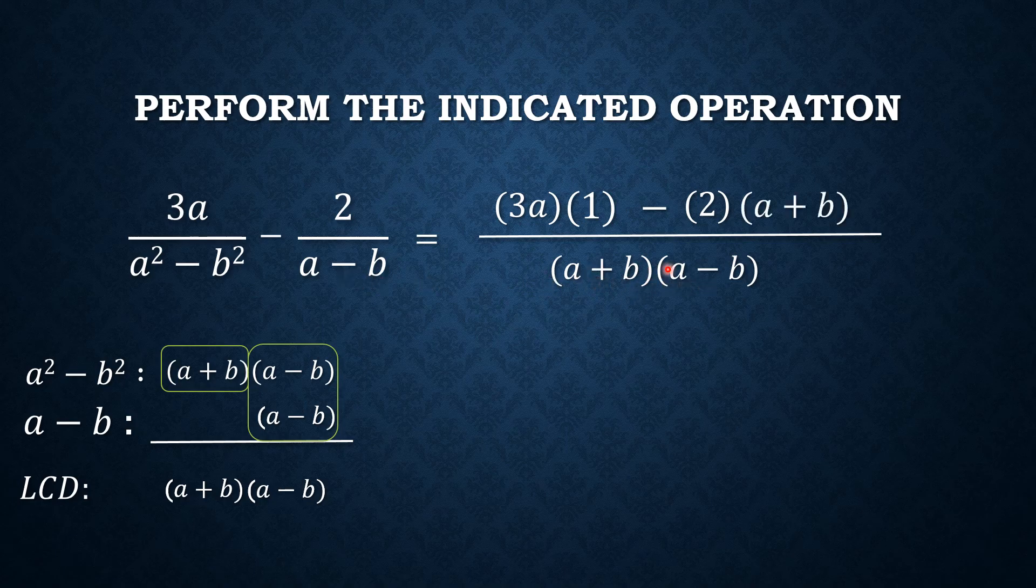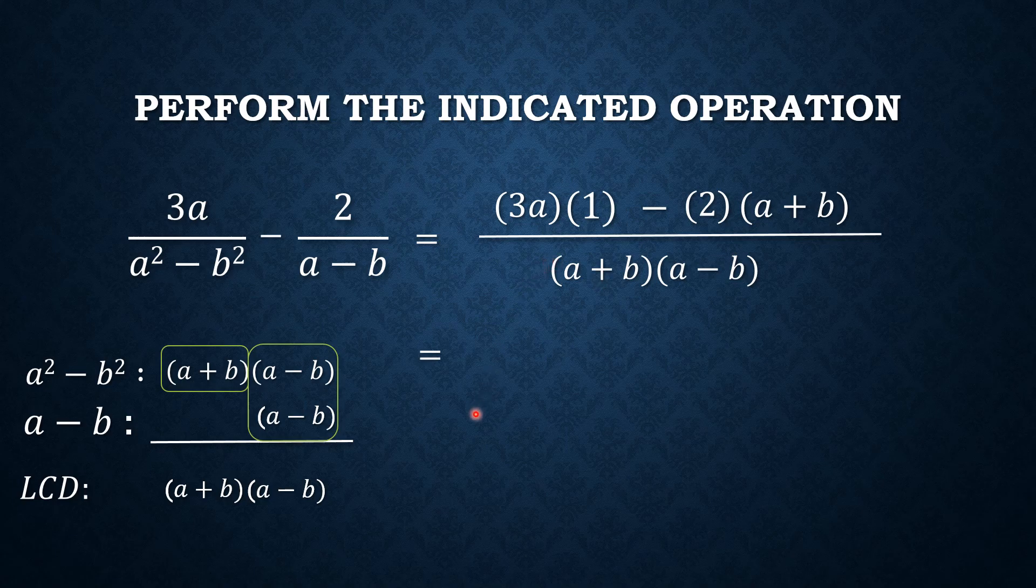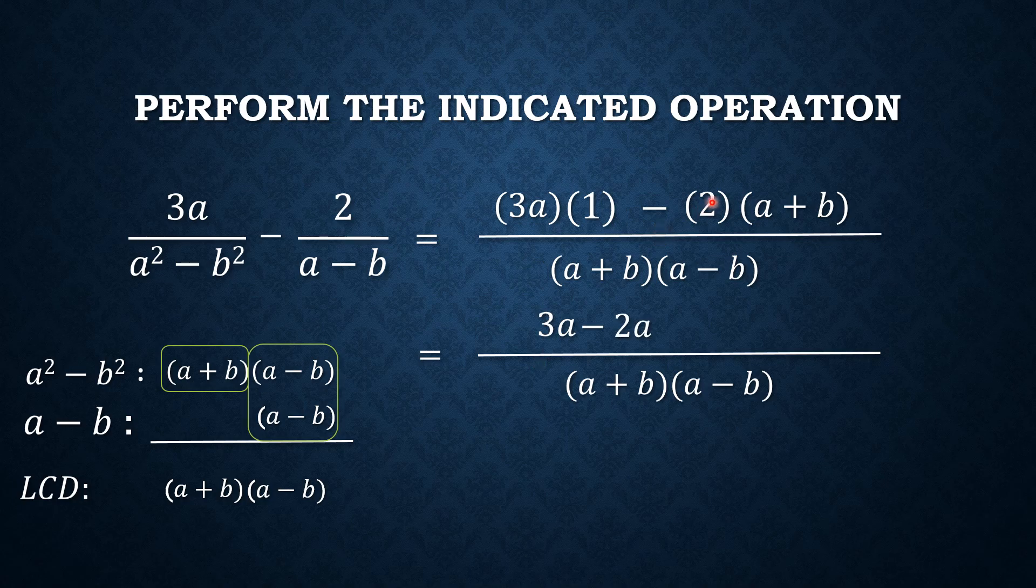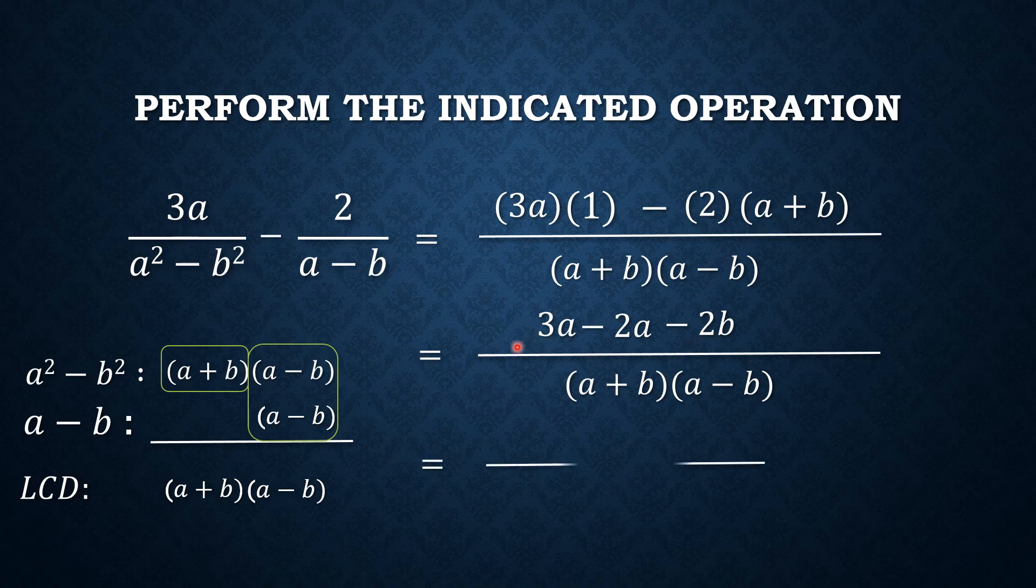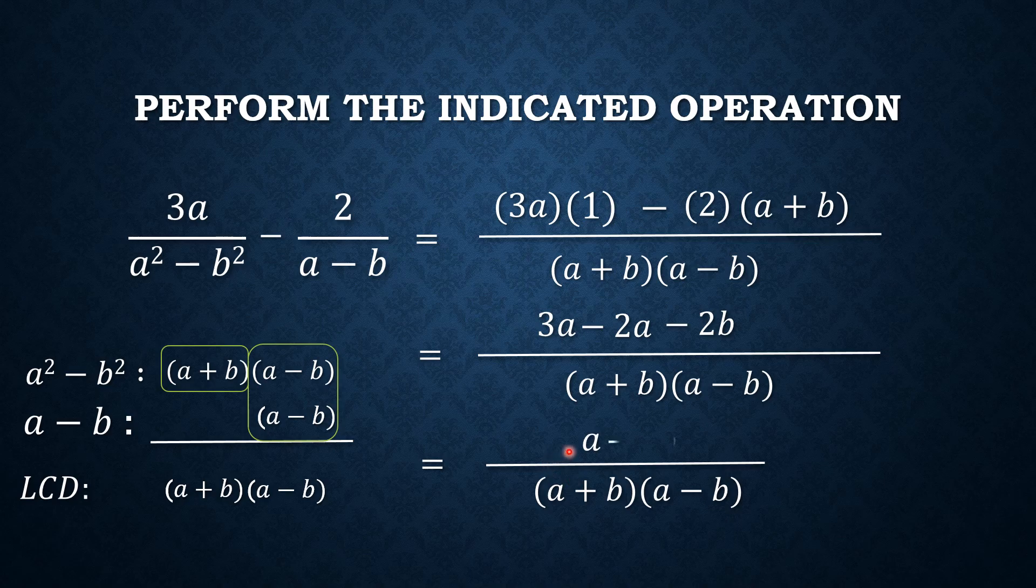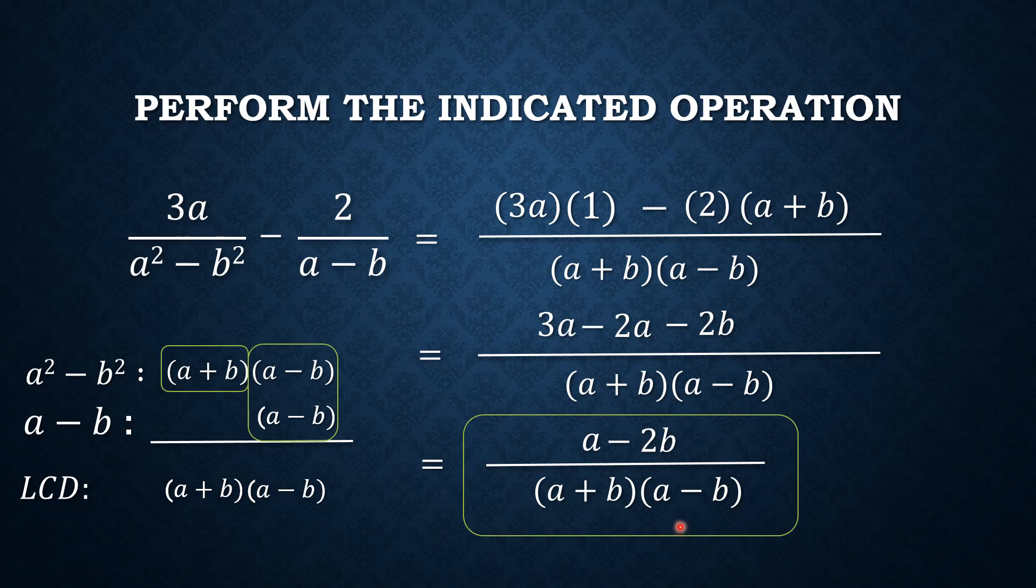By simplifying the numerators, we now have 3a minus 2a minus 2b is a minus 2b all over a plus b times a minus b. I hope you learned something in this video. Thank you very much for watching.